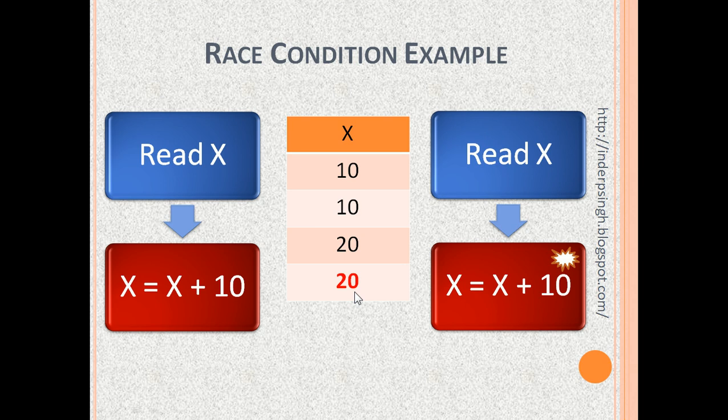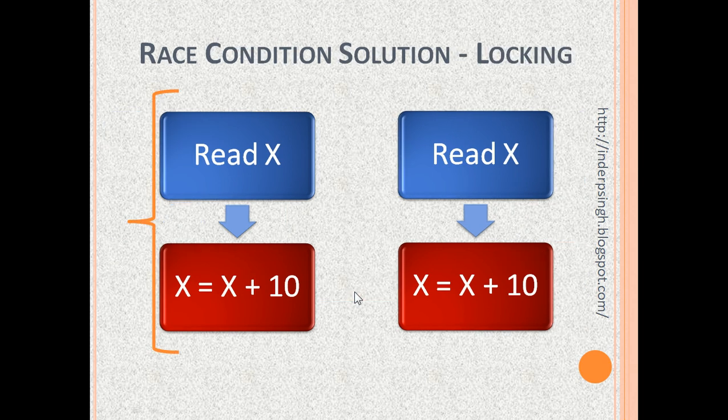What is the solution to race condition? One solution to race condition is locking. Read x and x is equal to x by 10 have to run as a batch, meaning they have to run one immediately after the other.